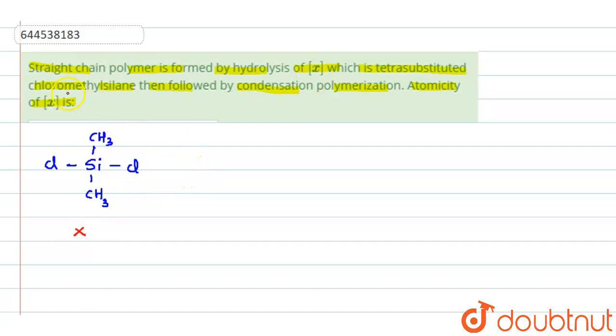X on hydrolysis gives you Si-CH3-CH3 and OH and OH. So straight chain polymer is formed by hydrolysis of x. This on condensation, so this is tetrasubstituted, isn't it?